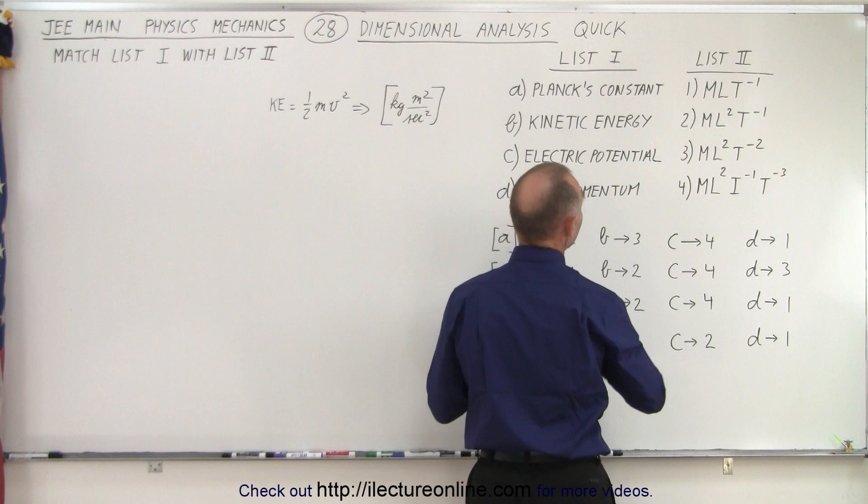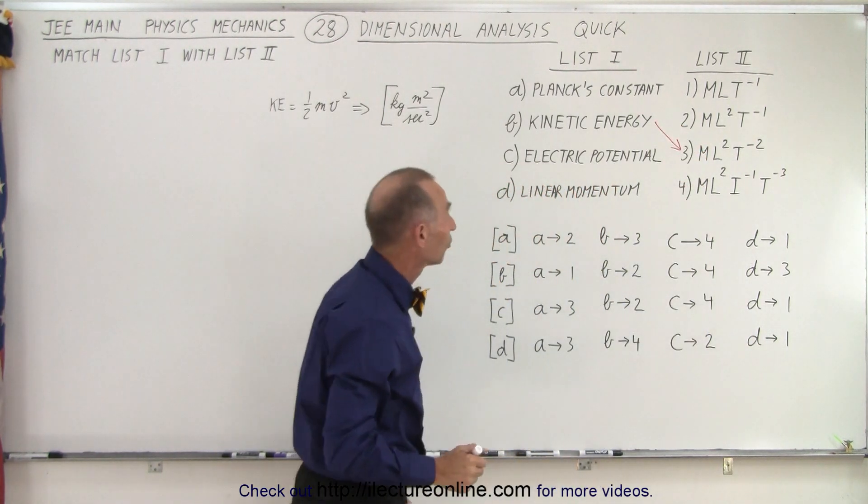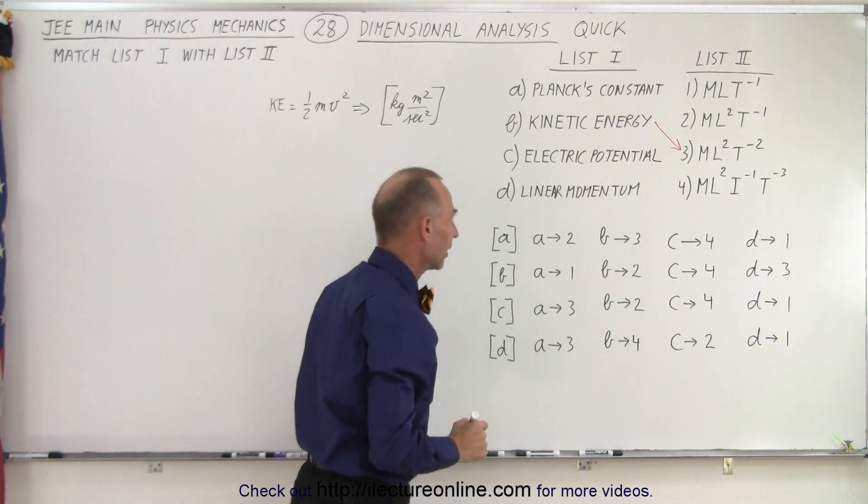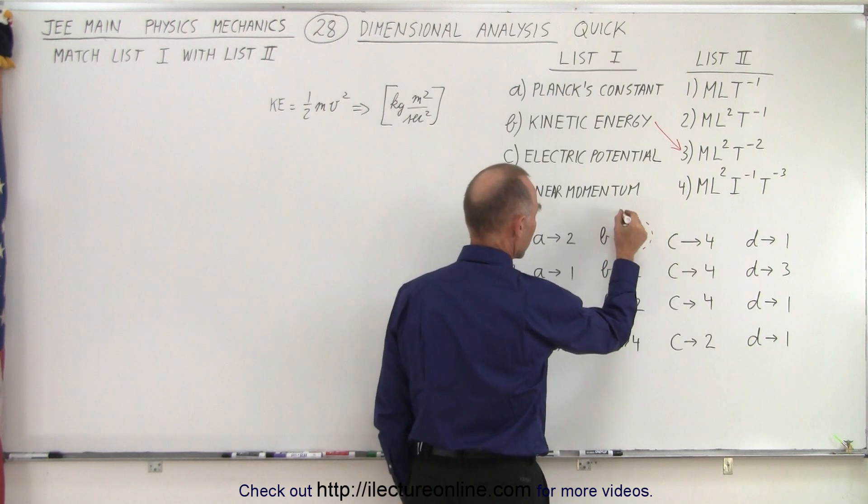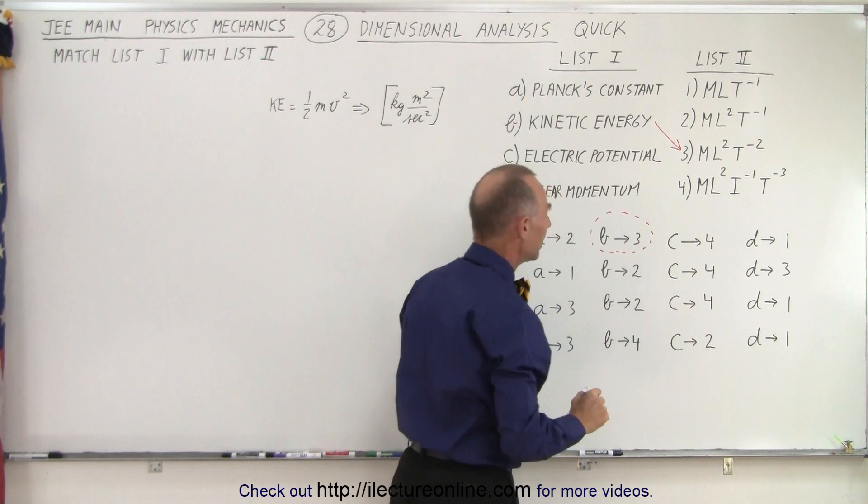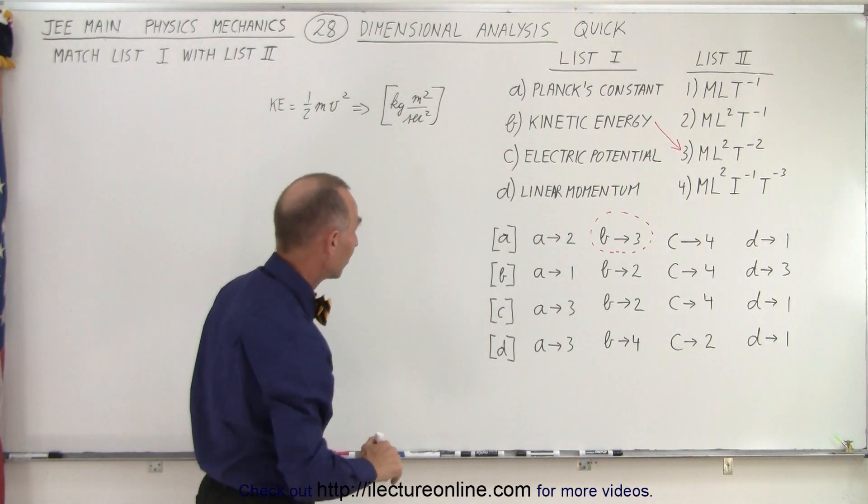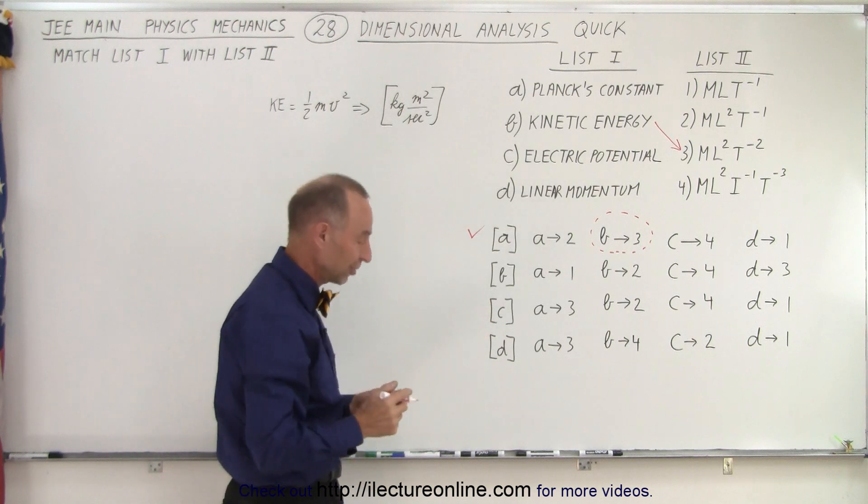So right away we realize that kinetic energy is associated with number 3. So that means that B and 3 belong together. Now notice there's only one where B is associated with 3. The other ones do not match that, so right away it must be A, and you move on, you don't check the others.